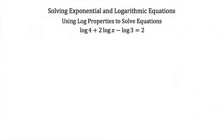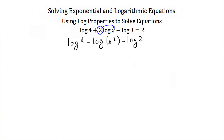Sometimes we have log equations with several logs. Here we have the log of 4 plus 2 times the log of x minus the log of 3, equal to 2. Before converting to exponential form, we need to combine everything into one logarithm using log properties. The first step is to eliminate coefficients — the 2 in front of log of x gets moved back inside using the power property, giving us log of x squared.